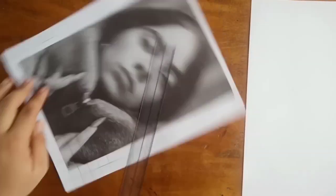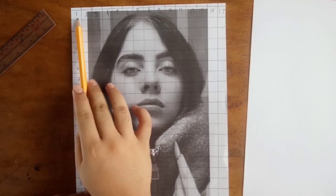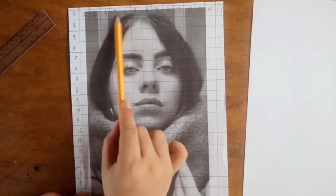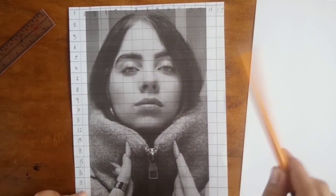And if i-grid pala natin yung reference natin, okay lang kung didiinin natin, para makita natin. And as you can see, may mga numbers sa gilid, ito yung magsisilbing guide sa atin.